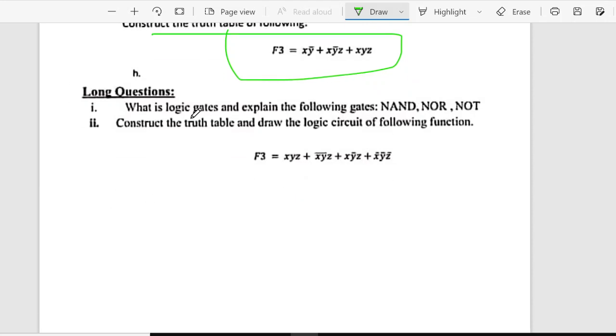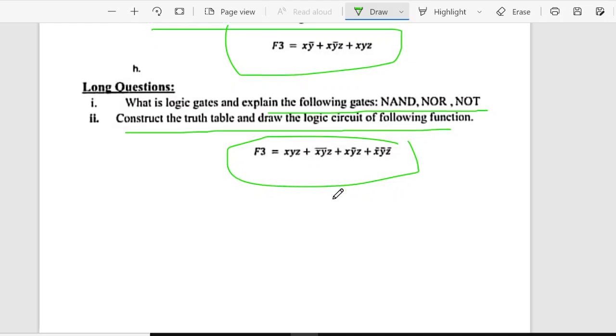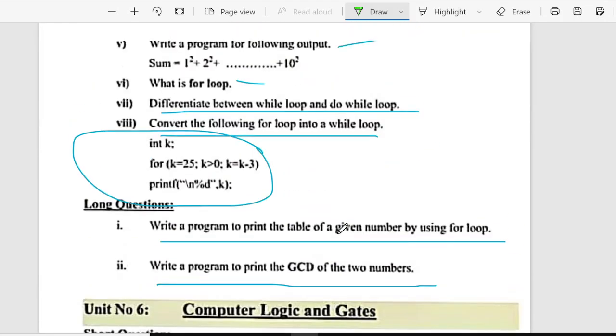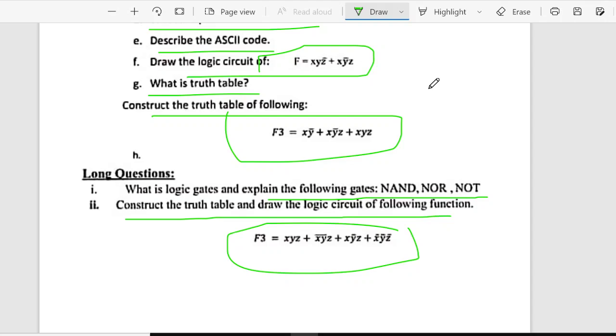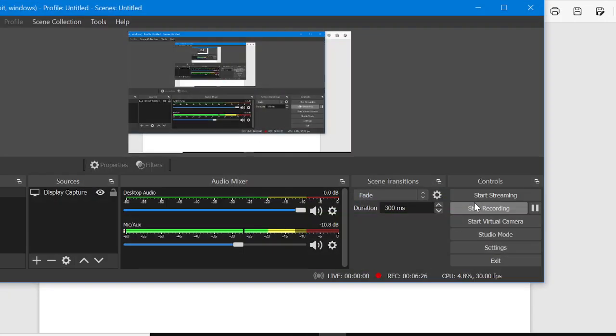Long question is, what are logic gates? Explain the following NAND and NOT. And last is, write the truth table and draw logical circuit of the following. That's it. You have important questions, short and long question of computer science, which is the full paper.